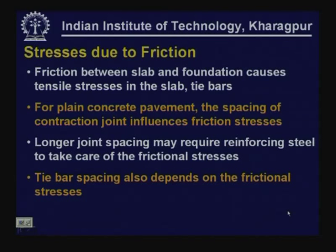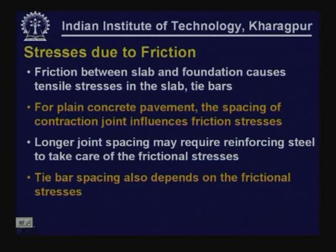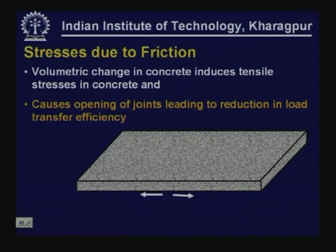There are also going to be stresses due to friction. Friction will be mobilized when the slab is trying to move — friction between slab and foundation causes tensile stresses in the slab when it is trying to contract. For plain cement concrete, the spacing of the contraction joint influences the friction stresses. Longer joint spacing may require reinforcing steel to take care of the frictional stresses. Tie bar spacing also depends on the frictional stresses. Volumetric change in concrete induces tensile stresses in concrete when it is trying to contract.